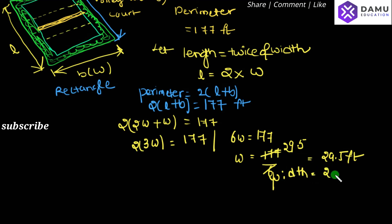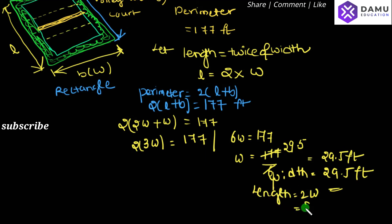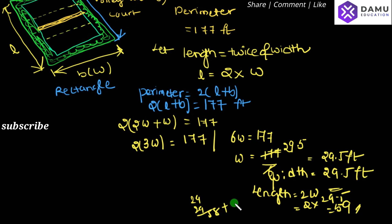Then what is the length? Length will be 2 times the width, that is 2 into 29.5, which equals 59 feet. So the length is 59 feet. Thanks for watching, please subscribe.